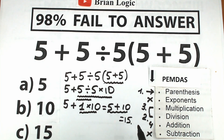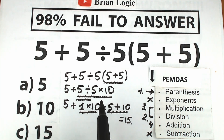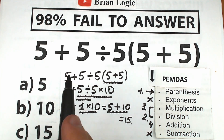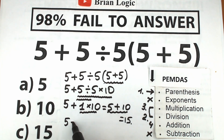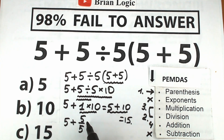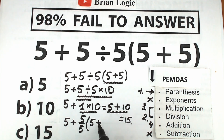A lot of students might say there's implied multiplication here and we should multiply first. But let me address that. Let's look at this challenge from another perspective — let's write it as a fraction: 5 plus 5 over 5, with 5 plus 5 inside parentheses. A lot of students say to write it as a fraction, so let's do that.